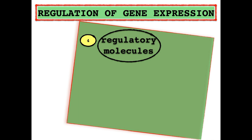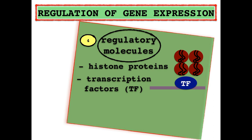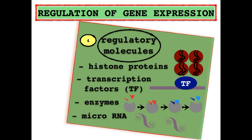Now let's sum up the remaining molecules regulating gene expression. The histone proteins that pack the DNA molecule into chromosomes in eukaryotes can undergo chemical modifications that result in making the DNA more loose or more compact, which modulates gene expression — more particularly the transcription of DNA into RNA. There are other proteins called transcription factors that directly bind to the DNA molecule, controlling the rate of gene transcription into RNA. Some enzymes can also regulate gene expression through their involvement in chemical modifications of the DNA, RNA, or the produced protein. MicroRNA is a short RNA molecule that can hinder gene expression by specifically binding to the RNA transcript.